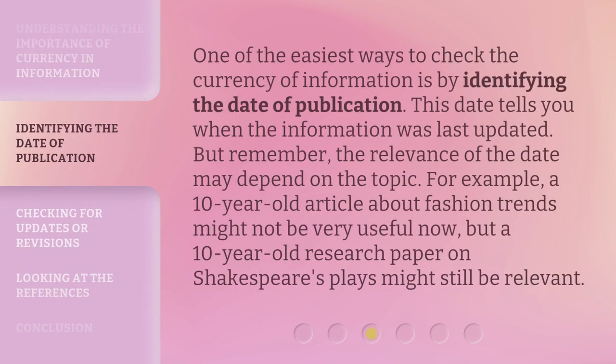One of the easiest ways to check the currency of information is by identifying the date of publication. This date tells you when the information was last updated. But remember, the relevance of the date may depend on the topic. For example, a 10-year-old article about fashion trends might not be very useful now, but a 10-year-old research paper on Shakespeare's plays might still be relevant.